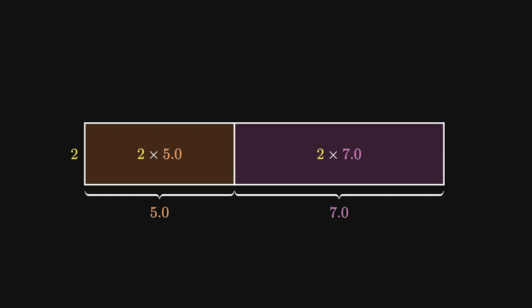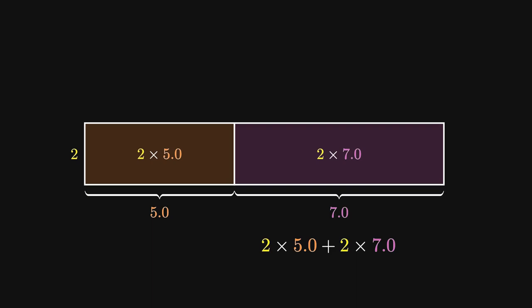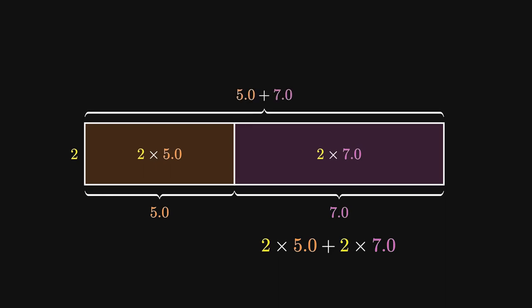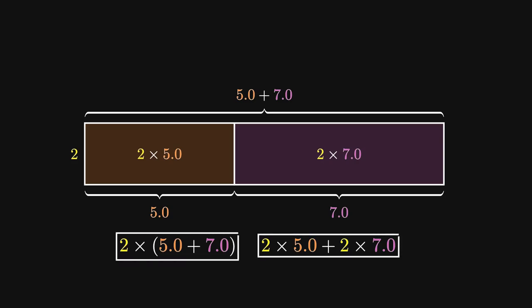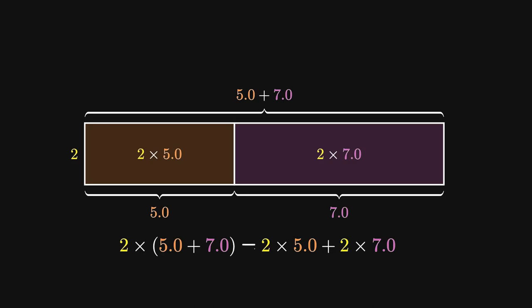The total area of this entire long rectangle is given by the area of the orange rectangle added to the area of the pink rectangle. On the other hand, this long rectangle has a base of 5 plus 7. This gives us an alternate calculation for its area, namely the height 2 multiplied by the long base 5 plus 7. And since these shapes add up to the same area, the left and the right hand sides should equal each other.